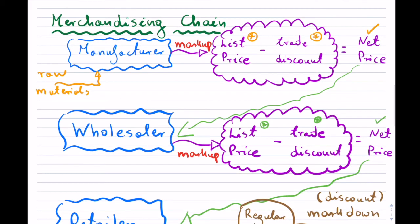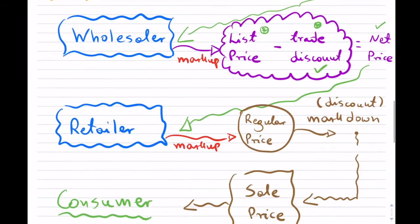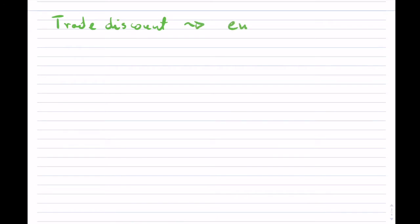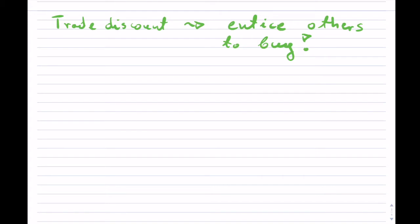Our goal in this video is going to be all about trade discounts. A trade discount is simply a tool that we use to entice others to buy — and that's what discounts really are. Those trade discounts happen only between different companies, so maybe a manufacturer and a wholesaler, or a wholesaler and a retailer. That's where trade discounts happen. You don't trade with a consumer directly; that would be called a markdown. So trade discounts are basically between the companies.